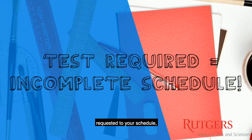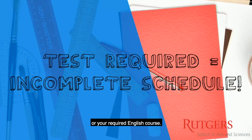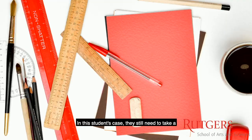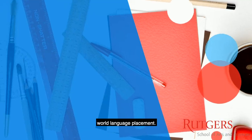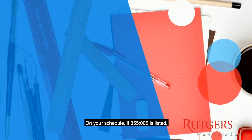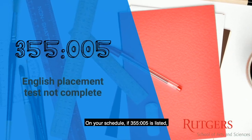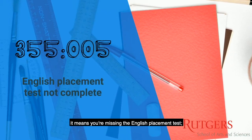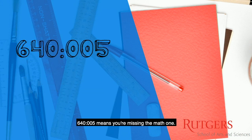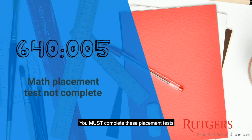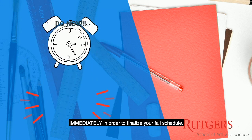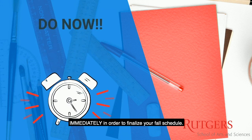In this student's case, they still need to take a world language placement. On your schedule, if 355:005 is listed, it means you're missing the English placement test. 640:005 means you're missing the Math one. You must complete these placement tests immediately in order to finalize your fall schedule.